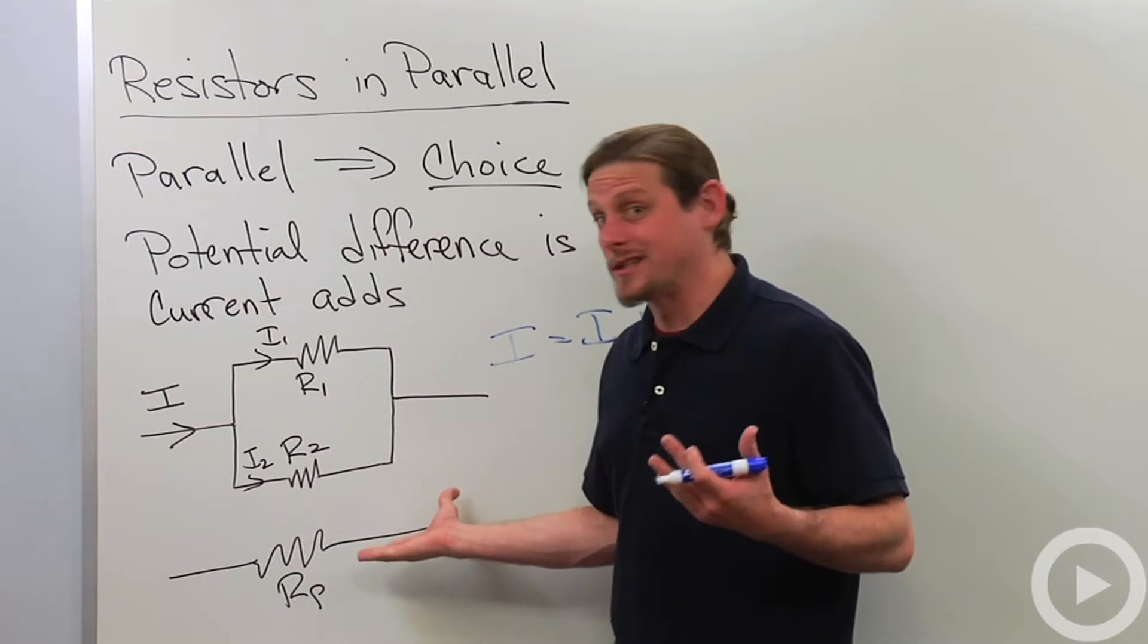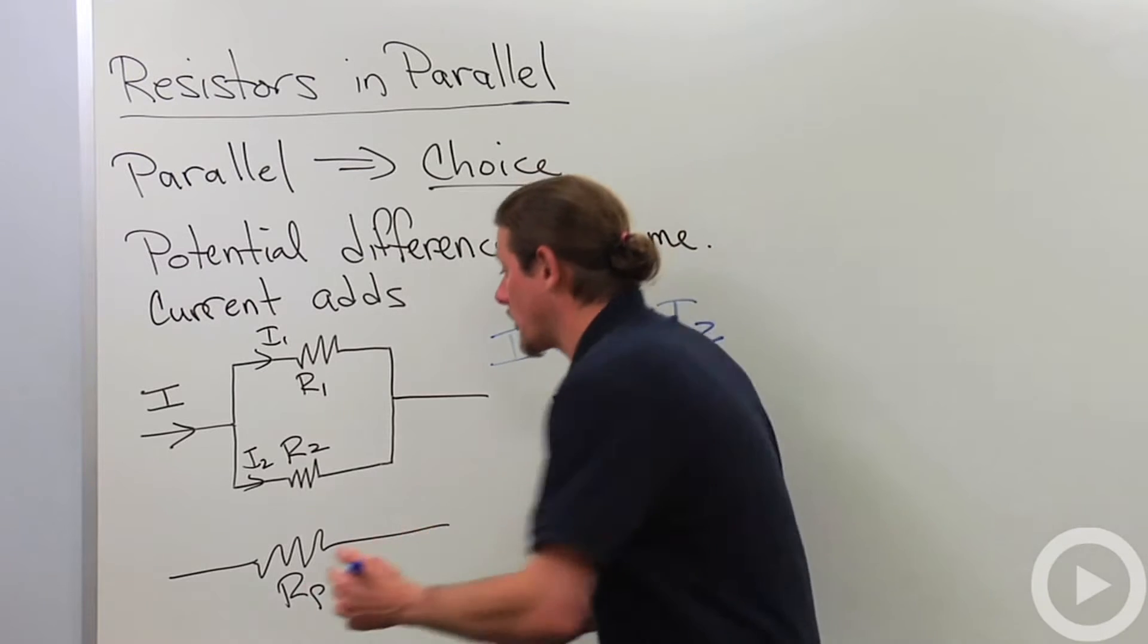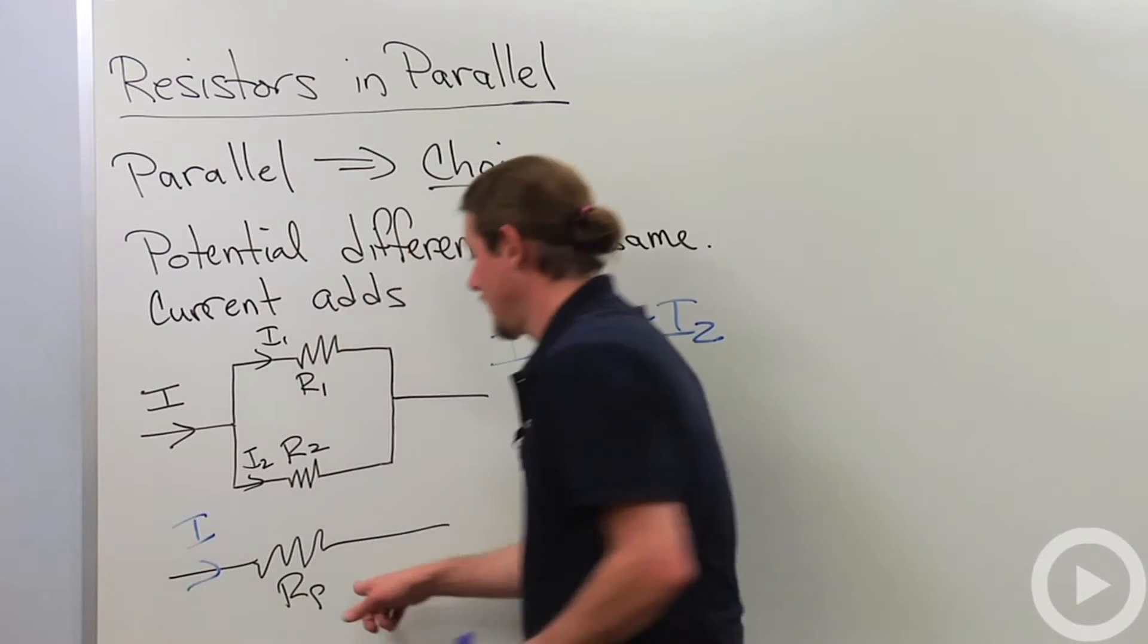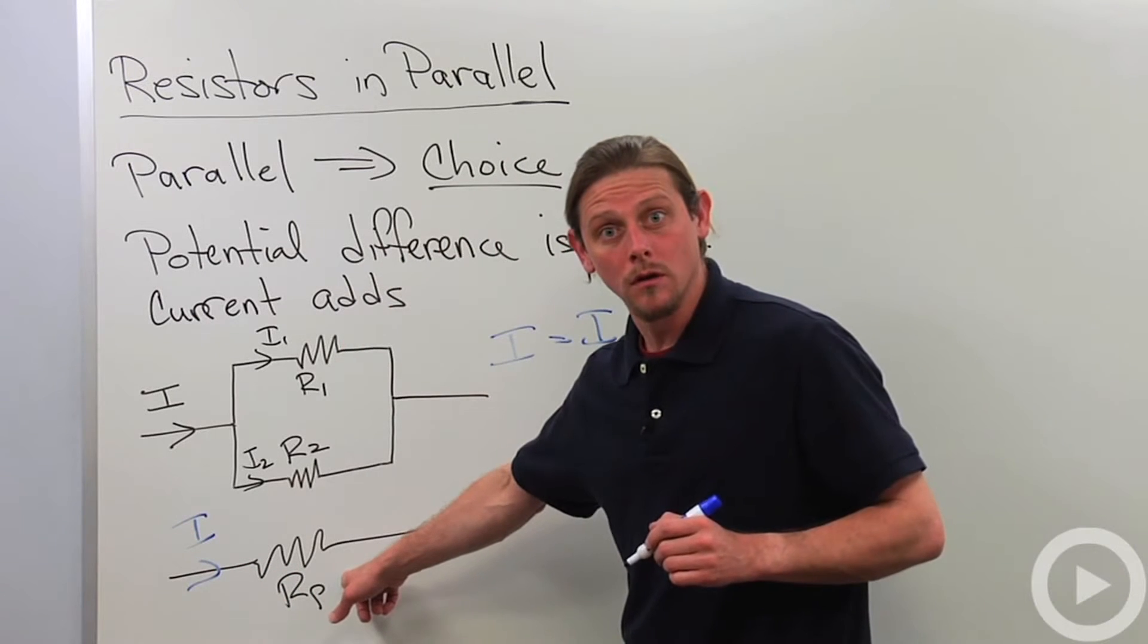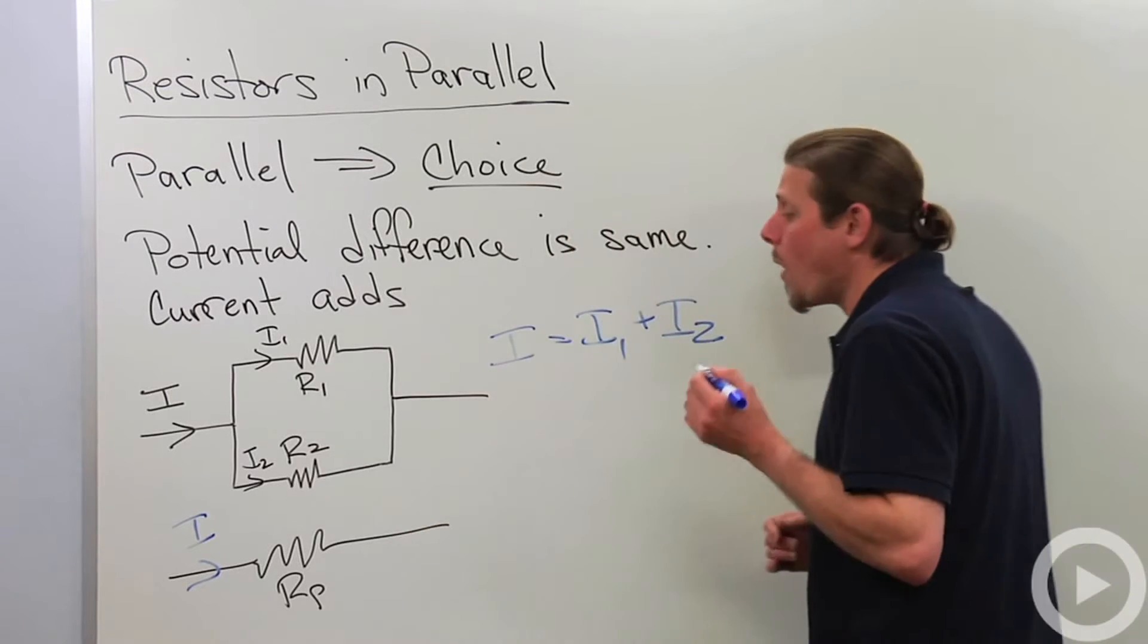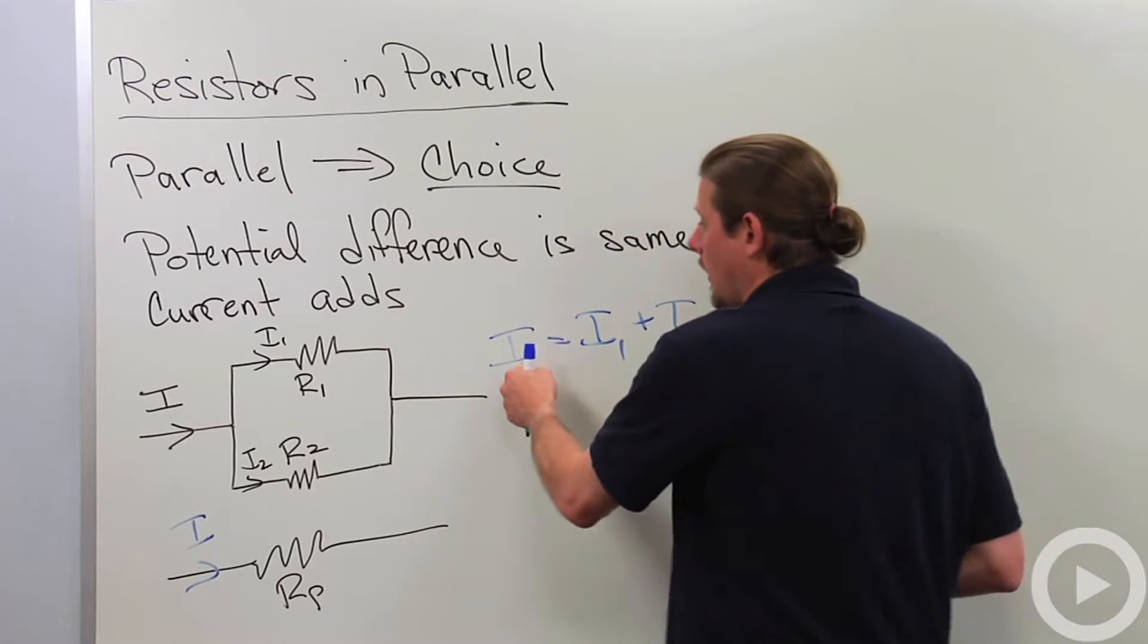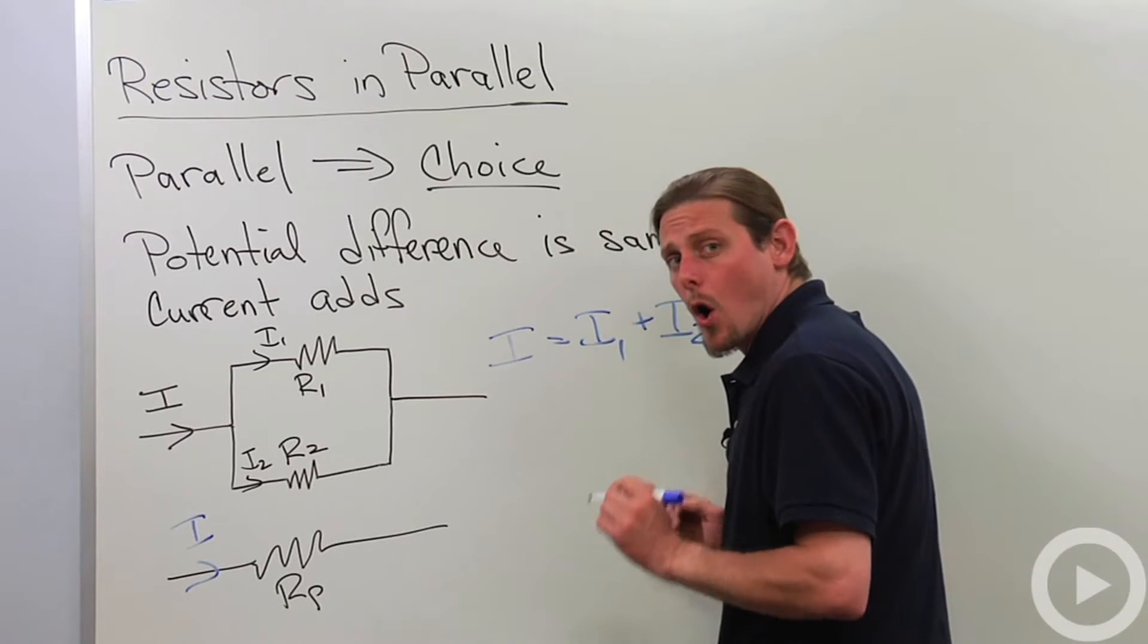what we'd like to do is consider this parallel network as a single effective resistor. So I want the potential difference to be the same. Obviously the current going in here into my effective resistor is going to be I. And so what we're going to do is we're going to write the current as delta V over R,